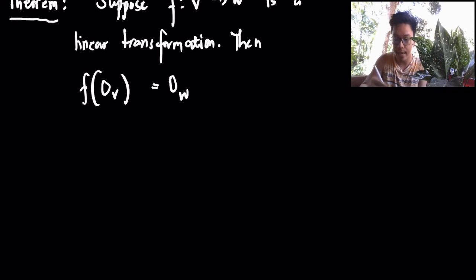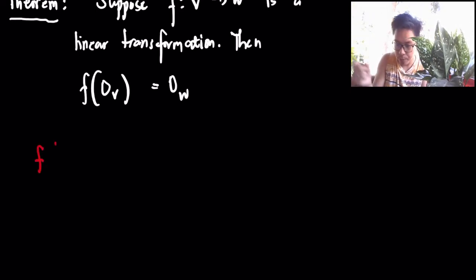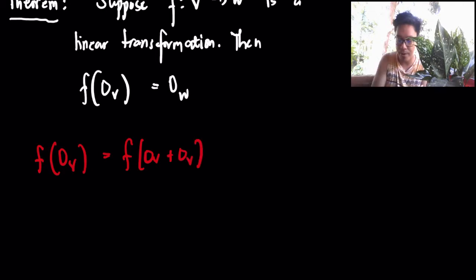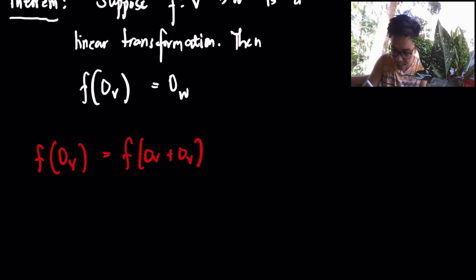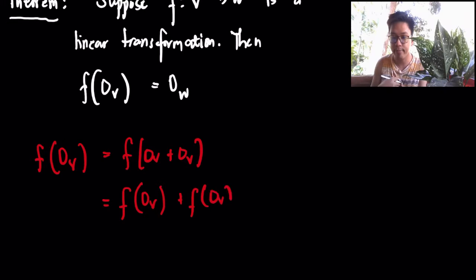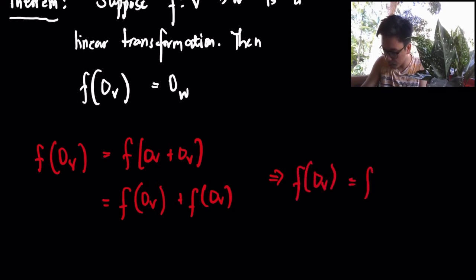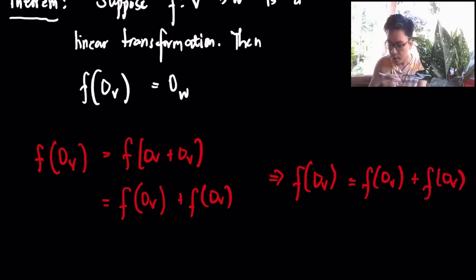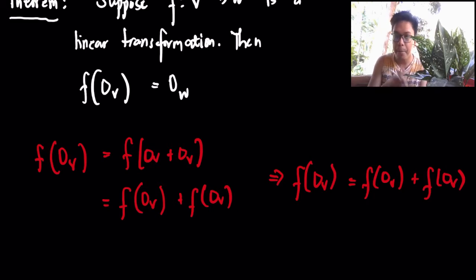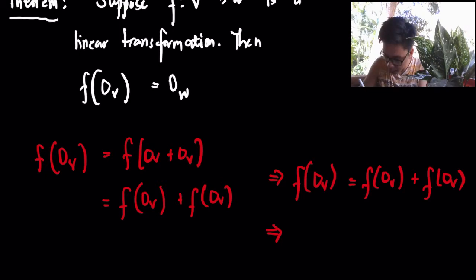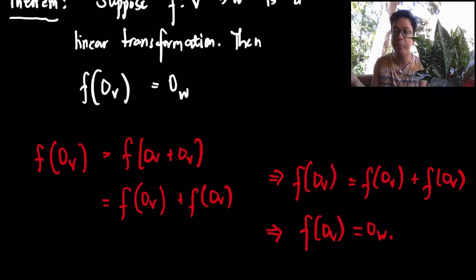To show the proof, I'm going to show the outline. If you have F of 0_V, that's the same as F of 0_V plus 0_V, so two zeros is the same as one 0. Since F is a linear transformation, I can separate them: F of 0_V plus F of 0_V. Adding both sides by negative F of 0_V, and the fact that F of 0_V plus the negative of F of 0_V equals 0_W, we get the equality. Therefore, we have proven the claim.